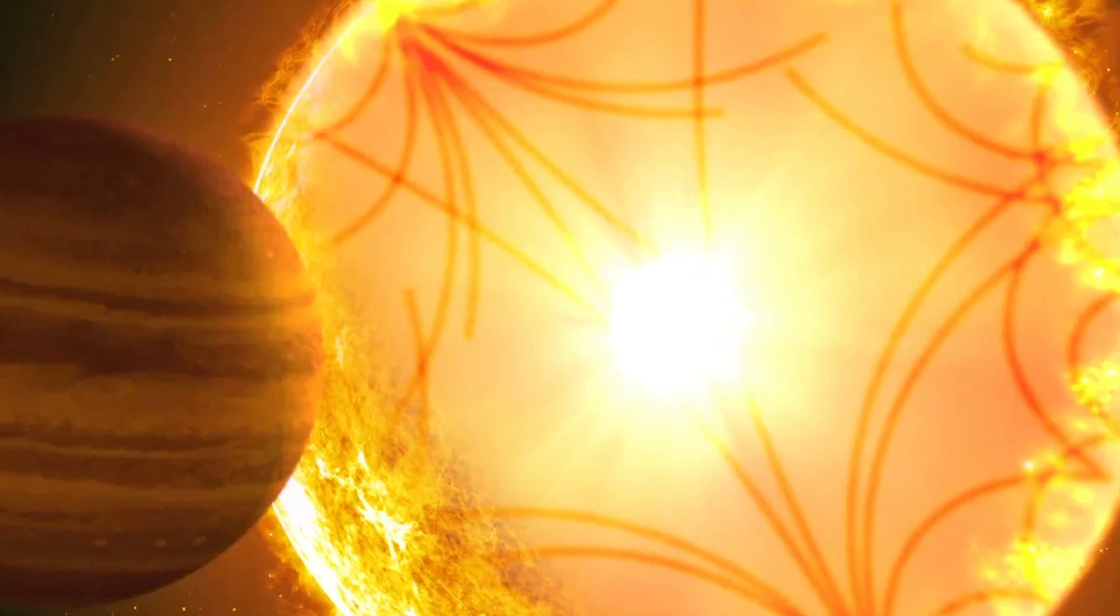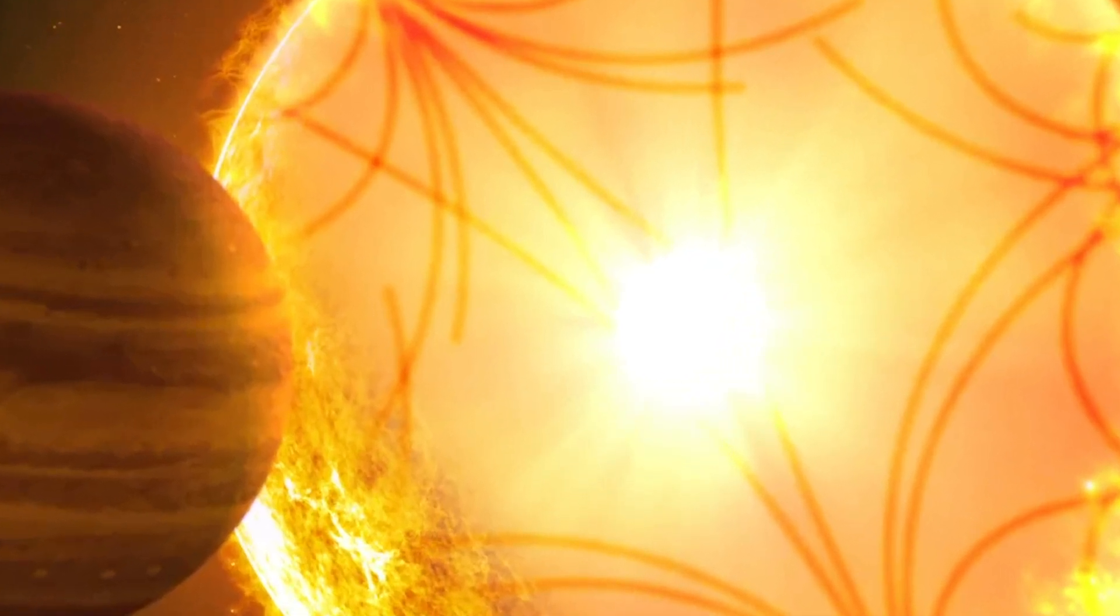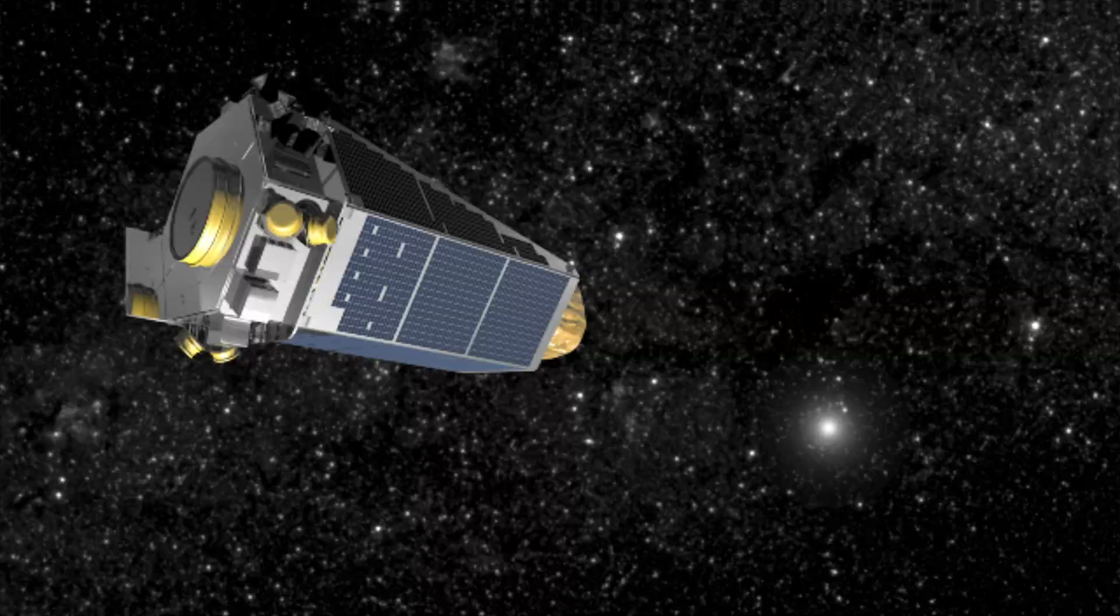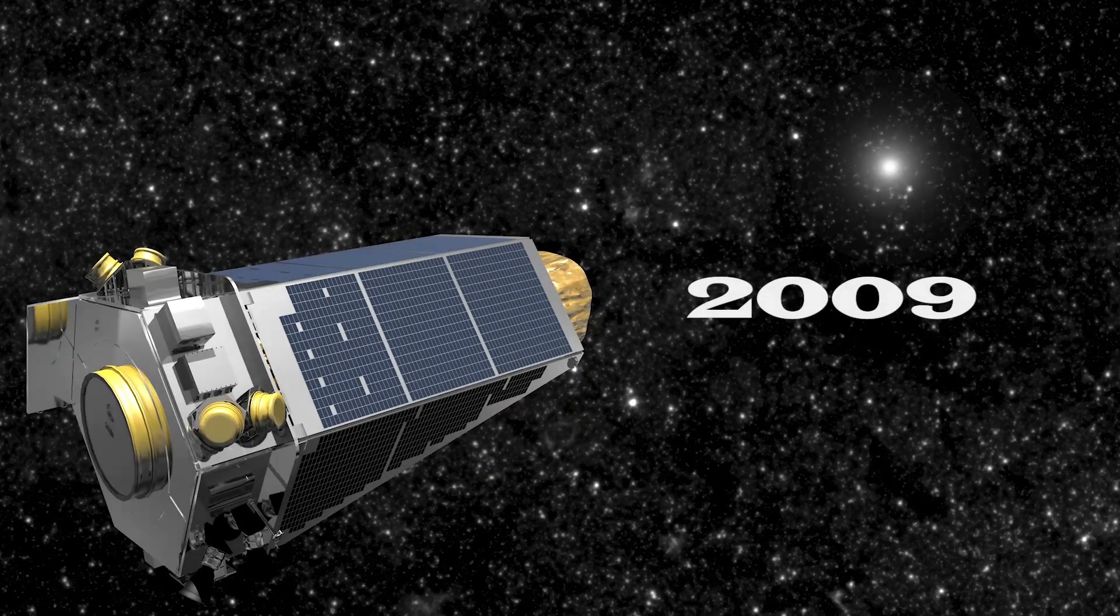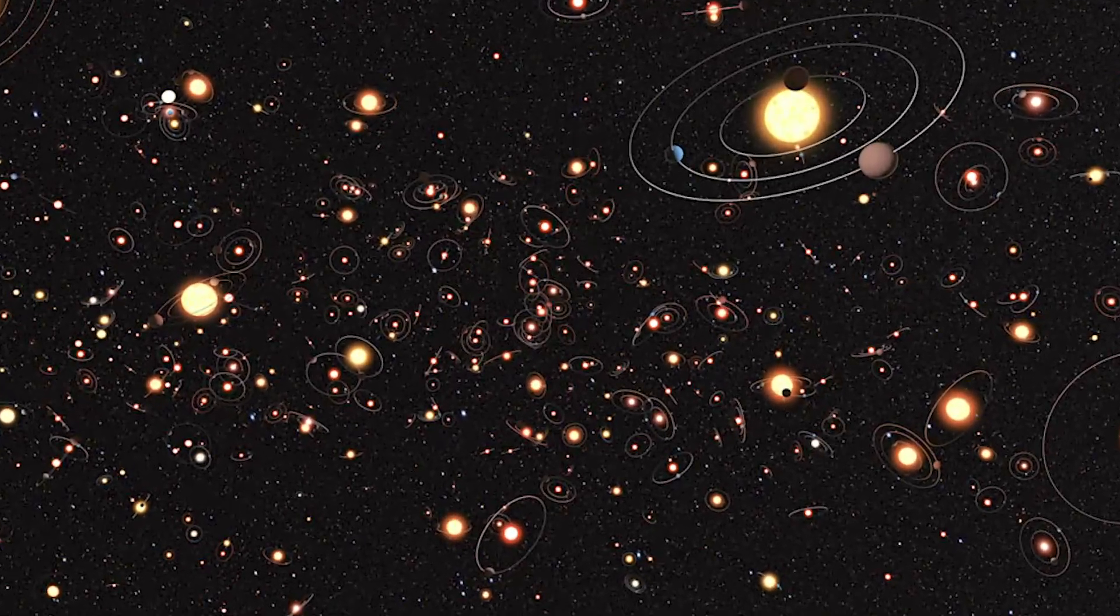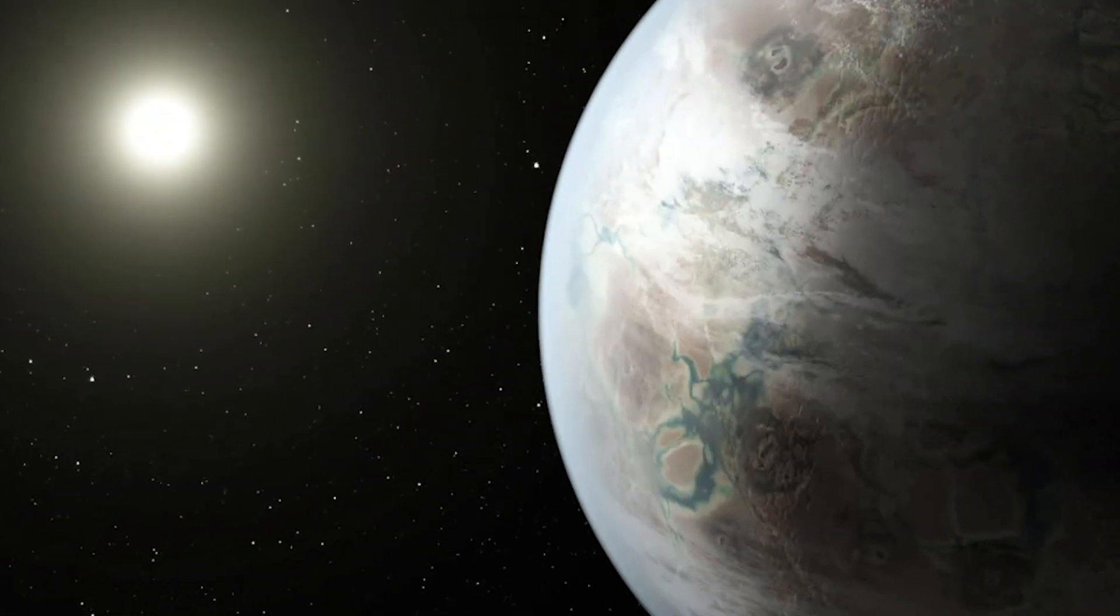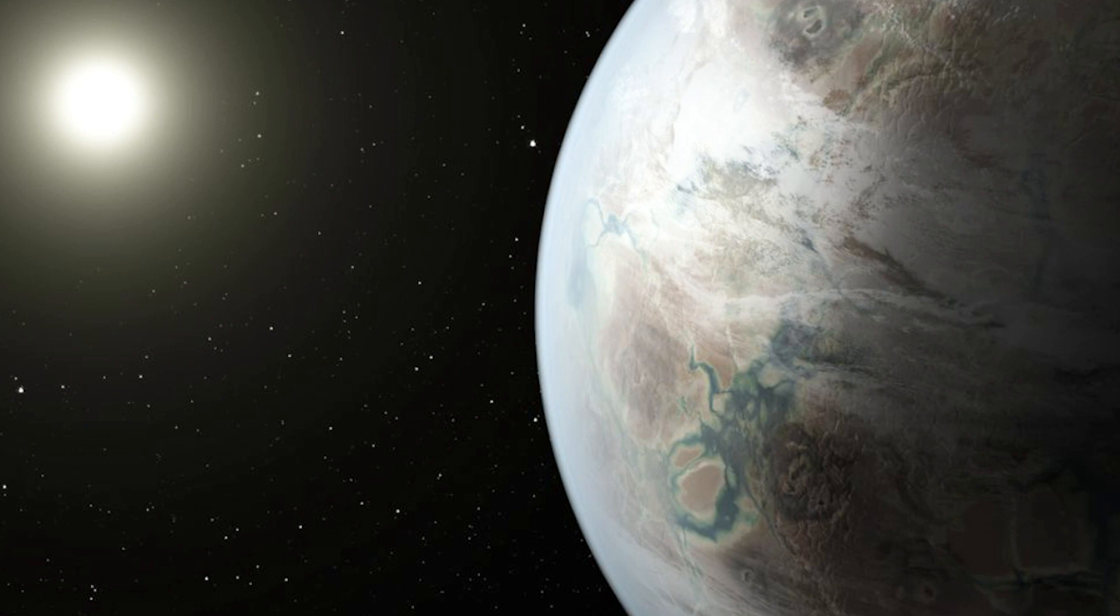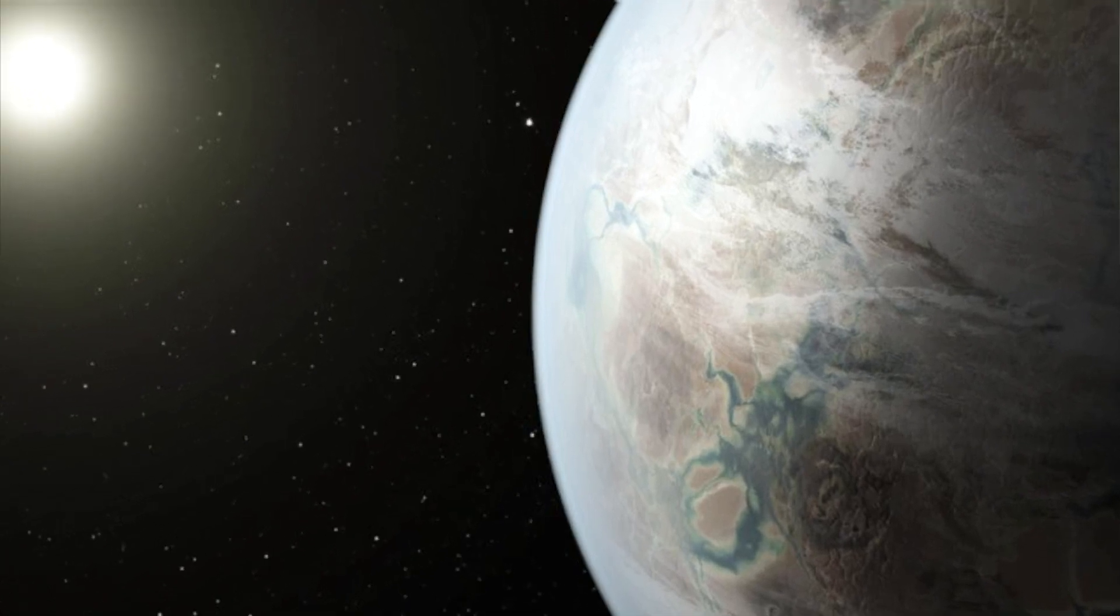The first planet ever spotted by the Kepler Space Telescope is falling into its star. Kepler launched in 2009 on a mission to find exoplanets by watching them cross in front of their stars. The first potential planet that the telescope spotted was initially dismissed as a false alarm.